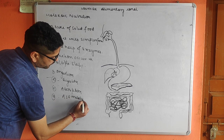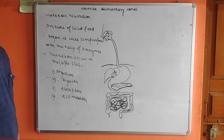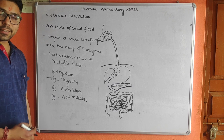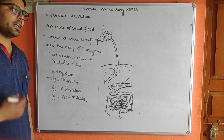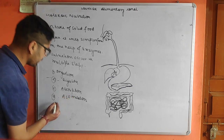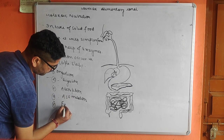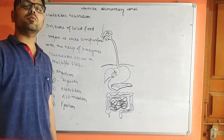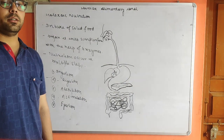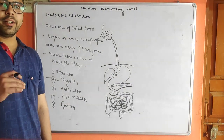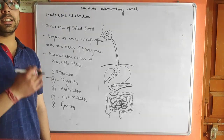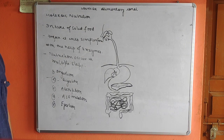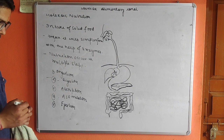Assimilation means transportation. If food is digested in the intestine, it is absorbed there and then transported to all parts of the body — that is assimilation. The last step is egestion, which means the removal of undigested food from the body. Remember, do not confuse egestion with excretion.